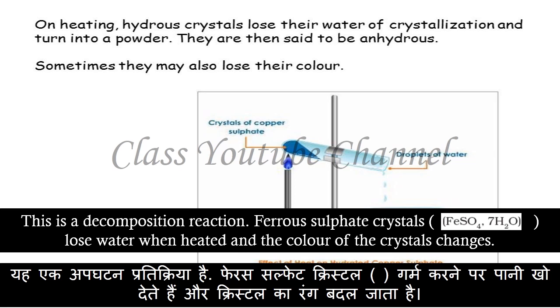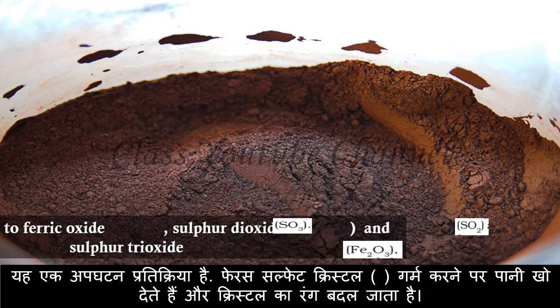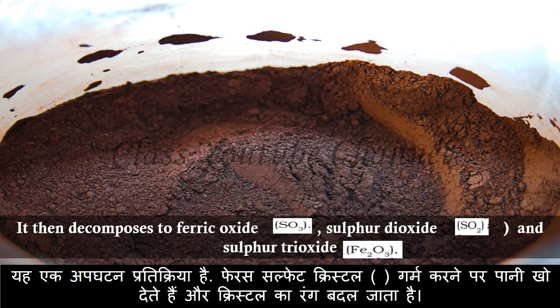Ferrous sulfate crystals lose water when heated and the color of the crystals changes. It then decomposes to ferric oxide, sulfur dioxide, and sulfur trioxide.